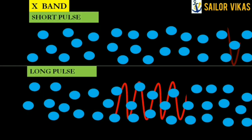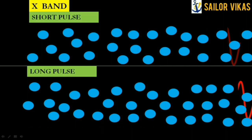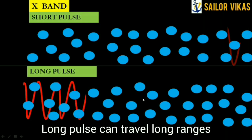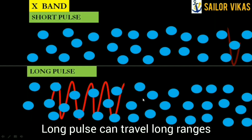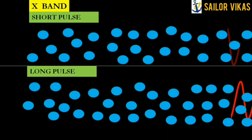For the long pulse there is no attenuation. So what we take from this is that the short pulse doesn't travel very far, but the long pulse can travel at a long range distance.